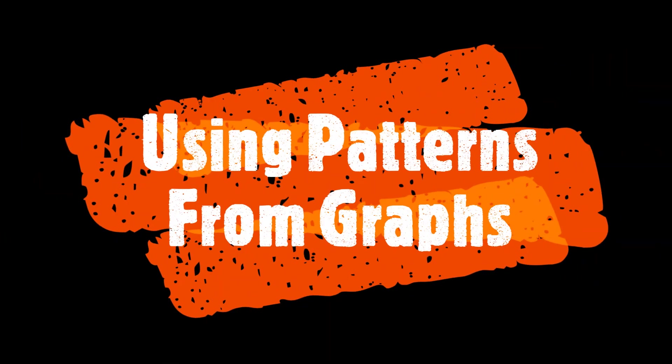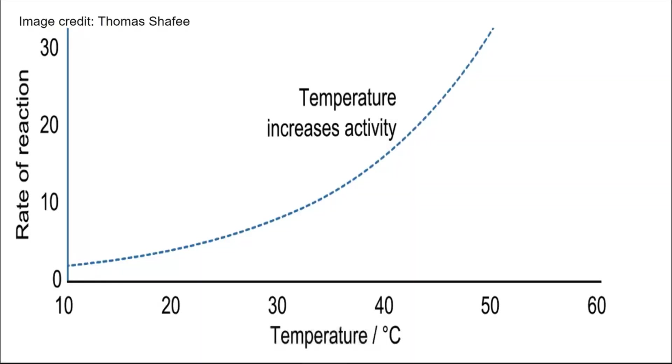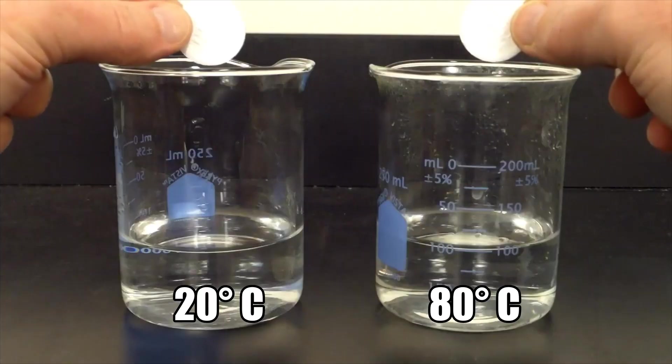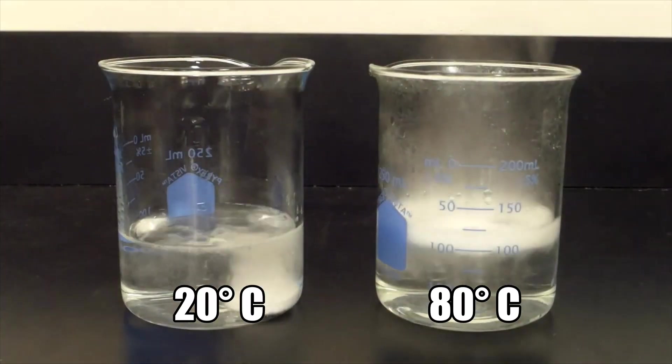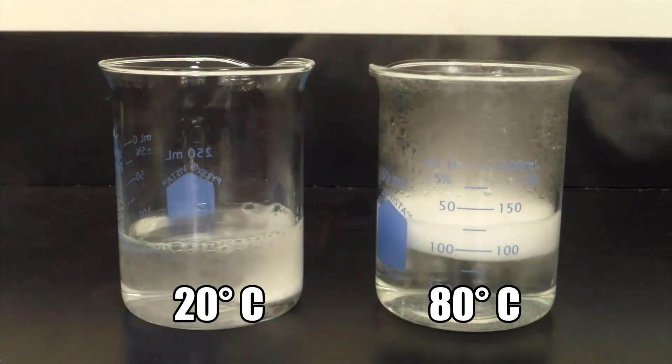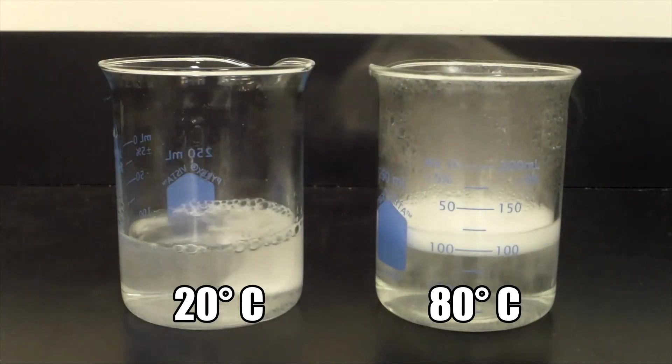We can also use patterns from graphs to help us understand the relationship of temperature and reaction rate. On this graph we see that temperature is the independent variable placed on the x-axis and reaction rate is the dependent variable placed on the y-axis. The graph shows that low temperatures are associated with a slower rate of reaction and that higher temperatures will cause reactions to have faster rates. This pattern on the graph agrees with what we observed when the effervescent antacid tablet dropped into warmer water and it reacted more quickly than the tablet dropped into colder water.